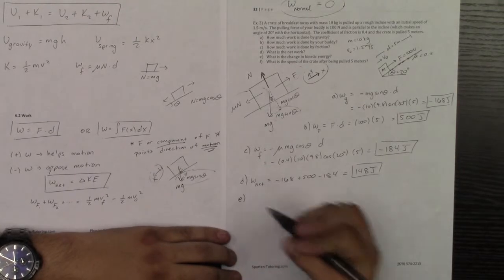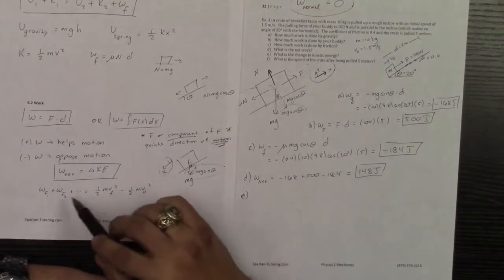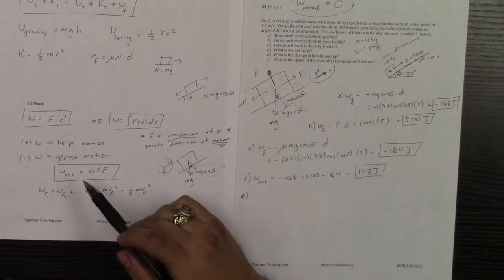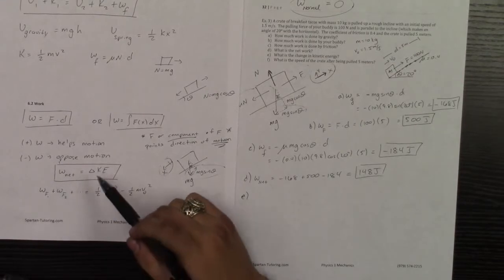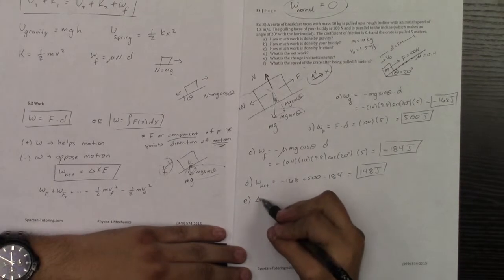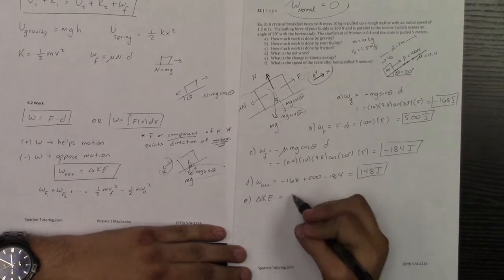Let's take a look at part E. Part E says, what's the change in kinetic energy? Here's the thing, the network done on a system, one of the most important equations in all of physics, the network done on a system is equal to that system's change in kinetic energy. And so your change in kinetic energy would be the network, 148 joules.